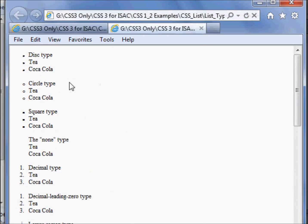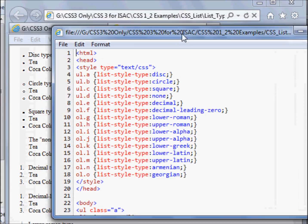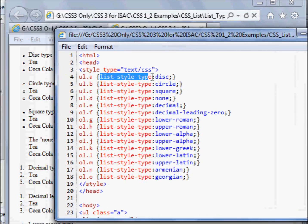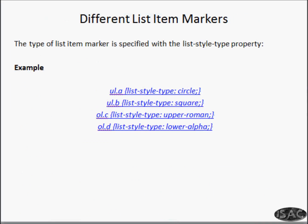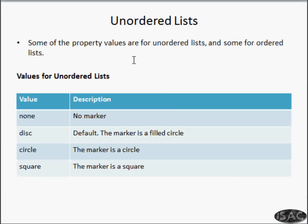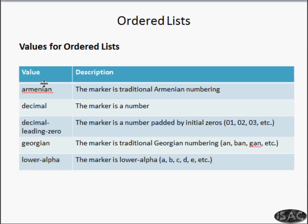So you understood the list-style-type property and the values you can pass. Some property values for unordered lists are: none for no marker, disc, circle for an outlined circle, and square for a square marker. For ordered lists, Armenian numbering is available. Decimal gives numbers 1, 2, 3, and decimal-leading-zero gives 01, 02, 03.